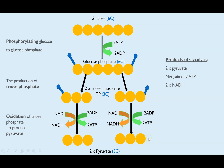In total then, from glycolysis — the first stage of respiration — we've created two molecules of pyruvate, which are next going to be actively transported into the mitochondrial matrix for the next step. We have a net gain of two ATP: although we've actually made four, two had to be used at the phosphorylation stage, so we describe it as a net gain of two. And we've made two reduced NAD, or NADH, which are going to be used in the final step: oxidative phosphorylation.